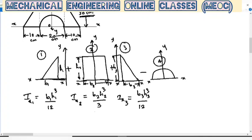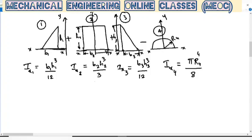For the semicircle (entity 4), IX4 — the moment of inertia about the X axis — is πR⁴/8, where R is the radius of the fourth entity. So the total IX, the moment of inertia of the composite figure about the X axis, is: IX = IX1 + IX2 + IX3 − IX4.